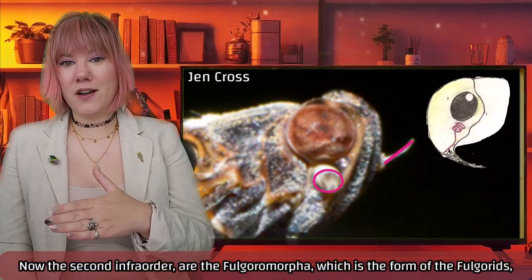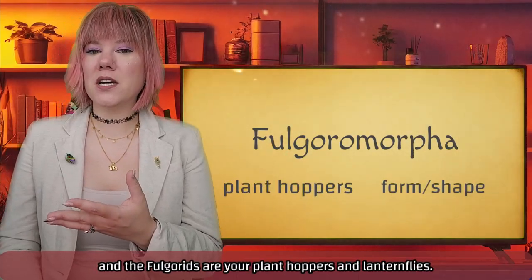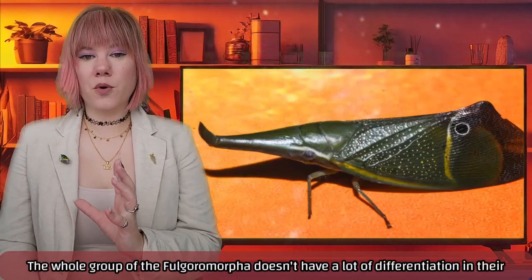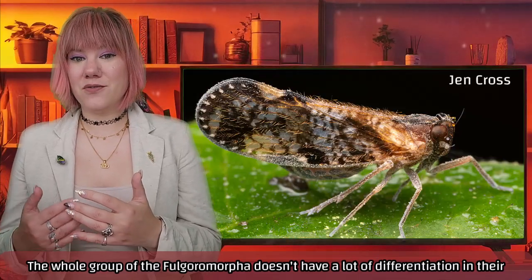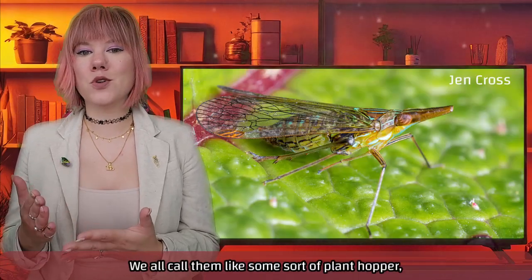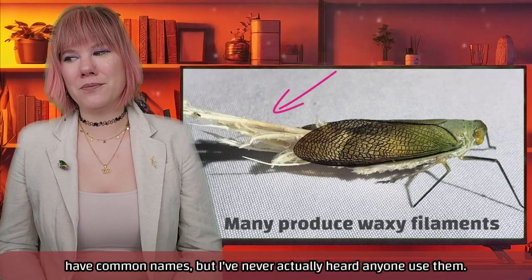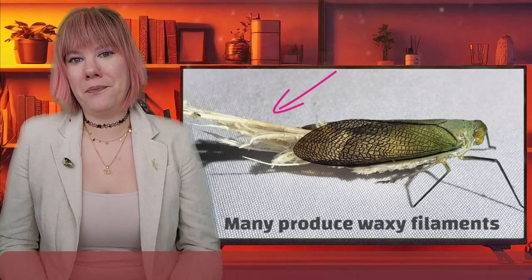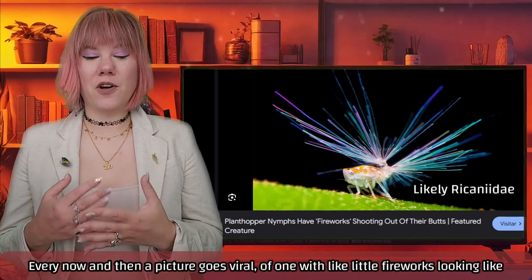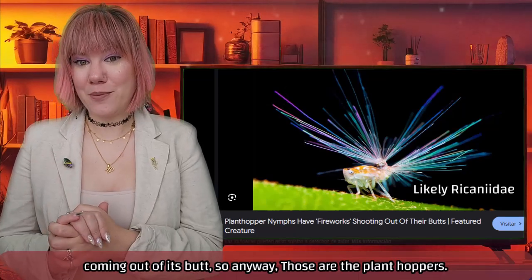The second infra-order is Fulgoromorpha, the form of the Fulgorids. The Fulgorids are your planthoppers and lanternflies. The whole group of Fulgoromorpha doesn't have a lot of differentiation in common names — we mostly call them some sort of planthopper. They're small insects that don't get a lot of attention, but they're quite beautiful. Every now and then a picture goes viral of one with little fireworks-looking things coming out of its abdomen.